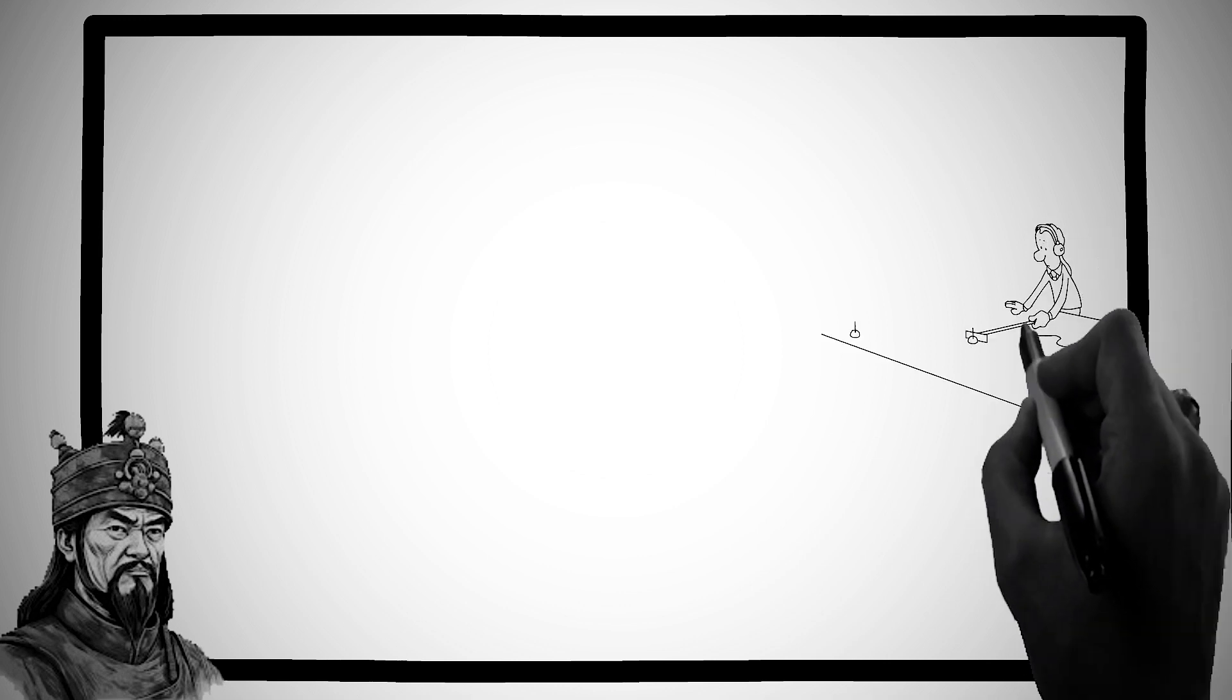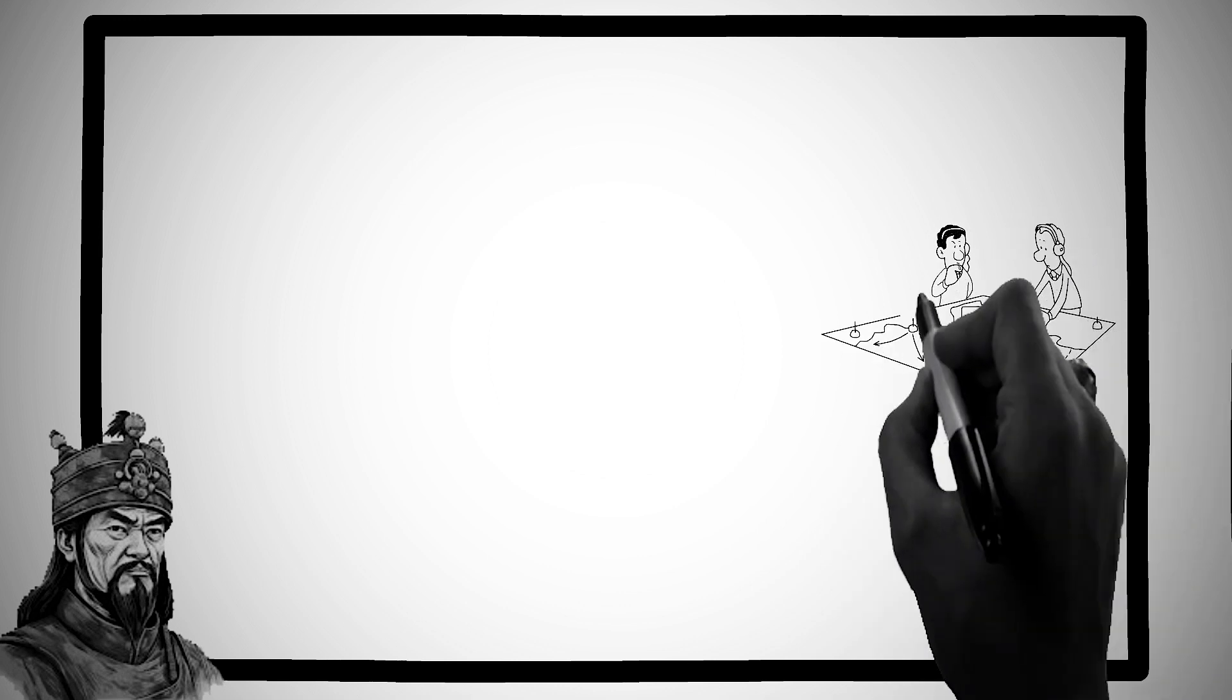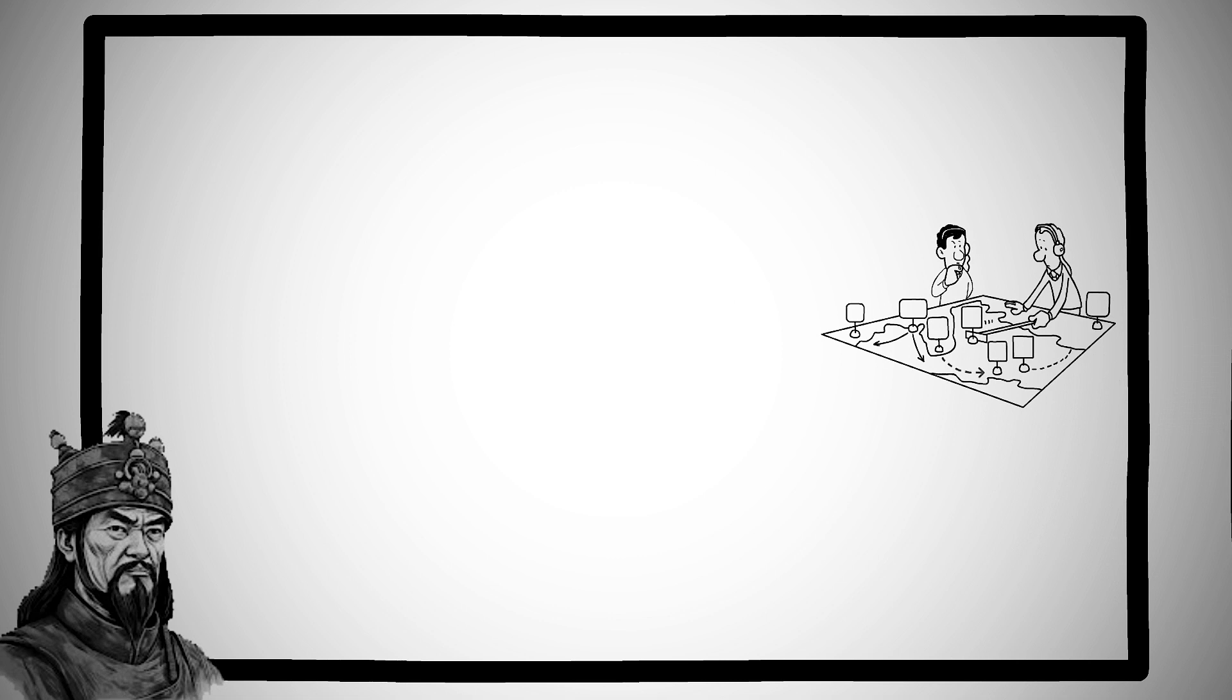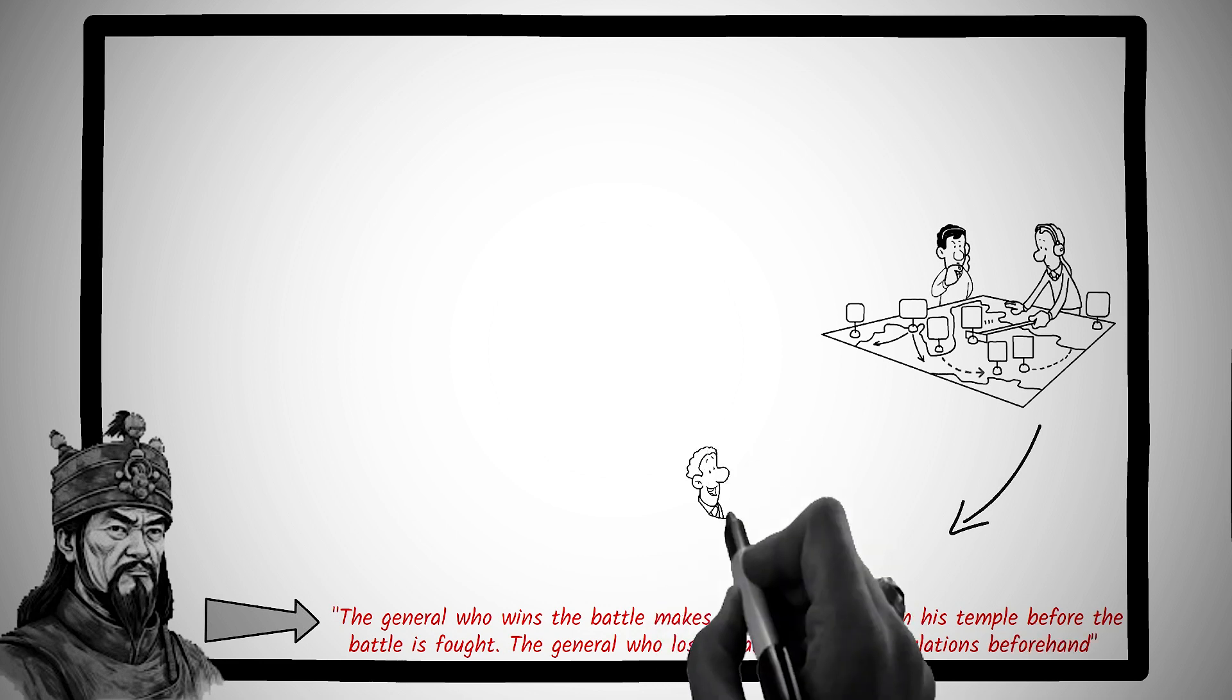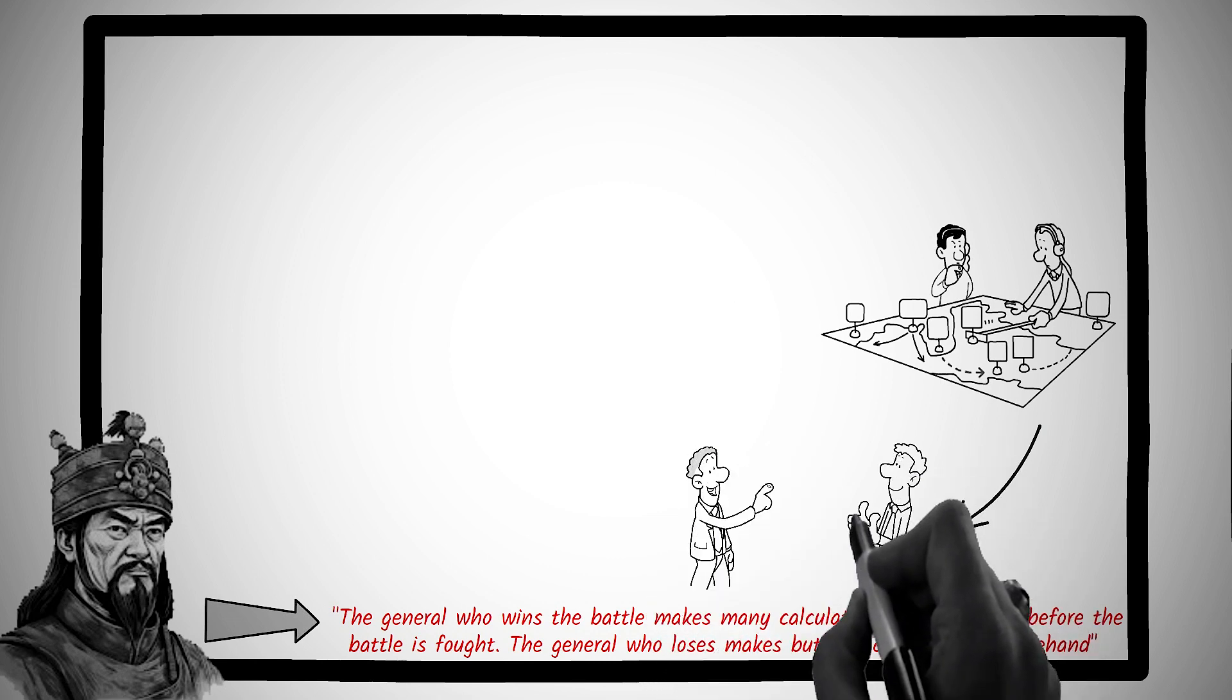From the early teachings of Sun Tzu's revered classic, The Art of War, we encounter a principle that not only underpins military tactics, but also resonates profoundly with our everyday choices and decisions. Sun Tzu professed, the general who wins the battle makes many calculations in his temple before the battle is fought. The general who loses makes but few calculations beforehand.